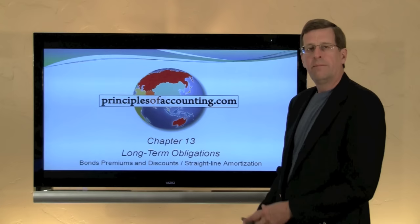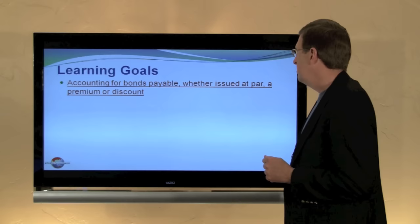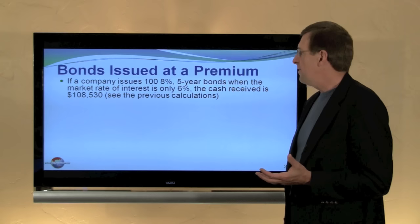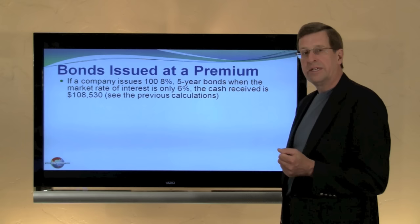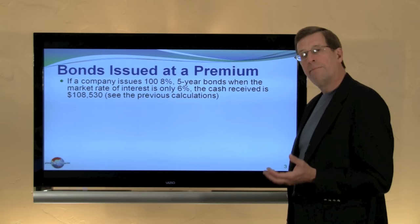I'm Larry Walther. This is PrinciplesofAccounting.com, Chapter 13. In this module we will be continuing our discussion of the accounting for bonds issued at a premium and discount using the straight-line amortization method. Recall from the previous module that we showed how if a company issued 8%, five-year bonds when the market rate of interest was only 6%, we would get a value of $108,530 — the price received for the $100,000 face amount of bonds.